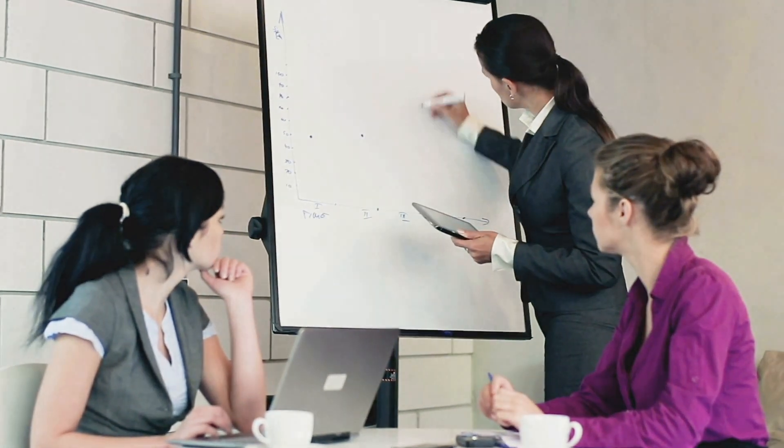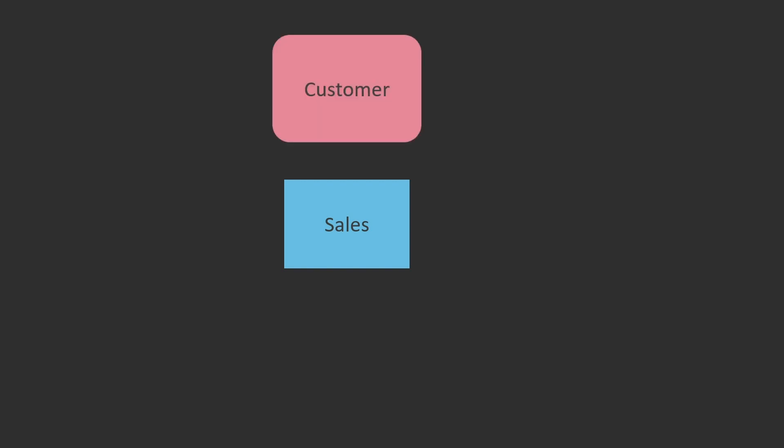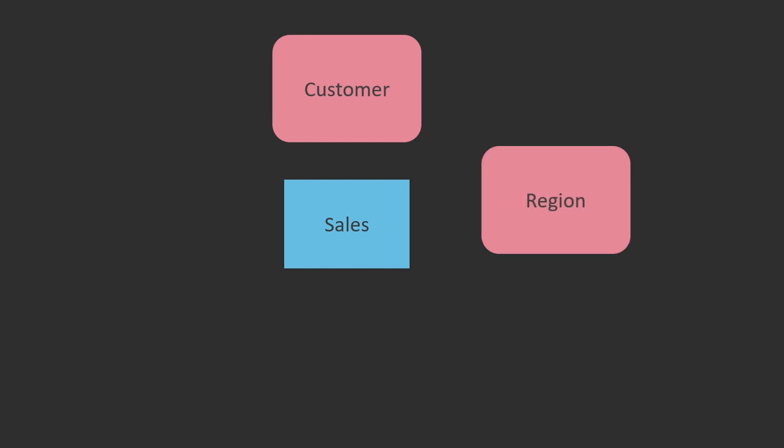Let's look at an example. In this star schema, we're looking at the sales process. We have a table — imagine this is just a location where we put data — and every time we have a sale, we log it here, essentially put it into a spreadsheet. Then we want to look at sales by the customer, figure out who actually bought what. We also need to know where those customers are located, so maybe we have a separate way of looking at sales, which is by region.